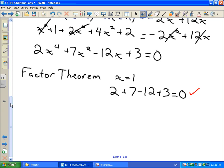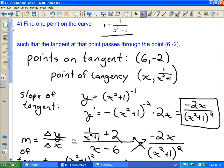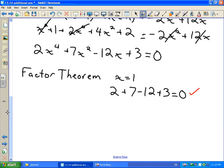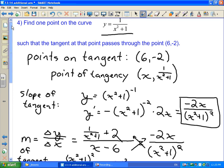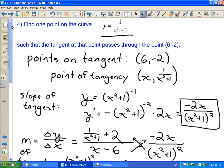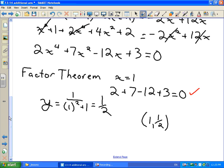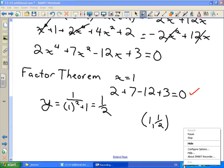Now I could then go ahead and use synthetic division or long division to divide through by that factor and get my other factors, but the question is only asking us for one point on this curve. So once I have this x value, I can stop. Well, I don't stop. I sub that into my original function to get my y value. This is going to work out to be 1/2. So one point on the curve such that the tangent at that point passes through the point (6, -2) is the point (1, 1/2). As I said, this is trickier than anything you're going to see on the test, but it's always fun to try.